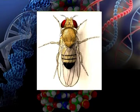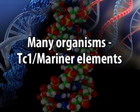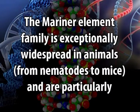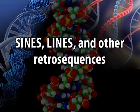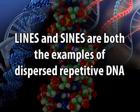In Drosophila melanogaster, P elements are also transposable elements. Transposons are also called jumping genes because they change their position in the genome by jumping from one position to another. In many other organisms, the TC1/mariner elements represent an exceptionally widespread gene family in animals, ranging from nematodes to mice. SINEs and LINEs are both examples of dispersed repetitive DNA.